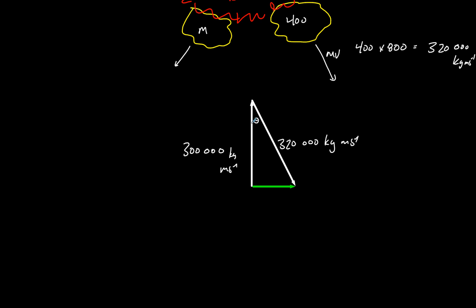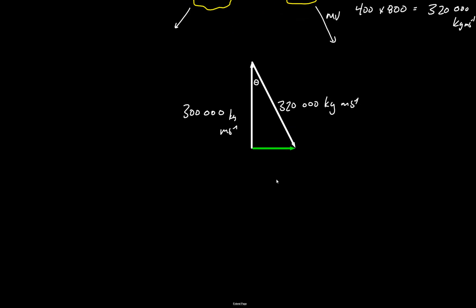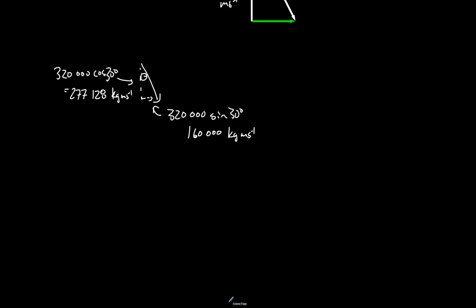So we're going to have to do some vector components. We've got a south component of this and we've got an easterly component. So the south component of this vector, let's draw it over here. It's going to be 320,000 times the cosine of 30 degrees and 320,000 times the sine of 30 degrees. So I'll just crunch the numbers and write them in here. So 320,000 times the cosine of 30 degrees, that's the component of this vector aiming southward. And that's in momentum units of kilogram meters per second. And this is the easterly component of that.